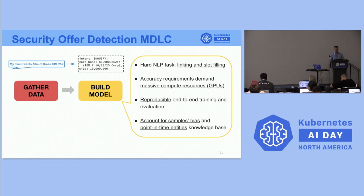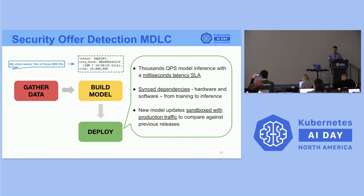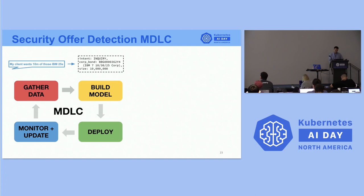Building the model: even with perfect data, the NLP task is one of the hardest — not just linking but also slot filling, since many offers can be mentioned simultaneously and must be grouped. Thread disentanglement adds further complexity. It requires a lot of compute to get accuracies acceptable enough for clients to automate. Since we're liable for everything we detect, we need to reproduce and explain all predictions end-to-end. We also need to account for sample bias in evaluations, and our knowledge bases must handle securities that sometimes only span one week — like repurchase agreements — and may be created within the day, requiring simulation of the market from the time annotations were made.